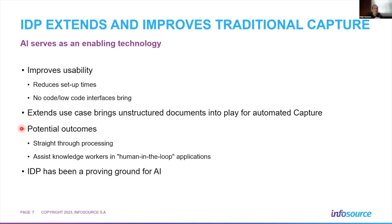There are a couple of potential outcomes that IDP vendors talk about. One is straight-through processing — adding enough intelligence to eliminate exceptions and go end to end. The other is human-in-the-loop, which we used to call key entry, now able to reduce knowledge workers' interactions with complex documents. IDP has really been a proving ground for AI, and we've had AI in capture and IDP for three or four years now, proving it does work in business applications.